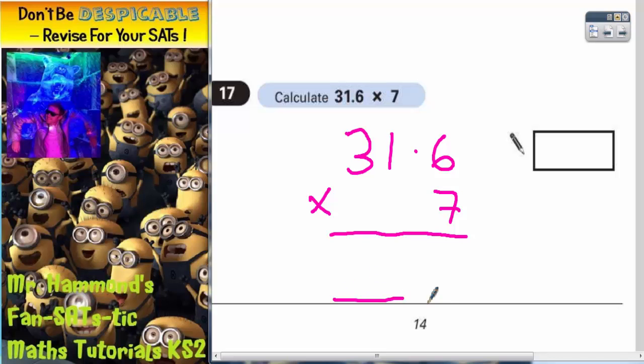Get two lines for your answer. Now we start at the end of the calculation. So 7 times by 6 is 42. Put your 2 in, carry your 4.